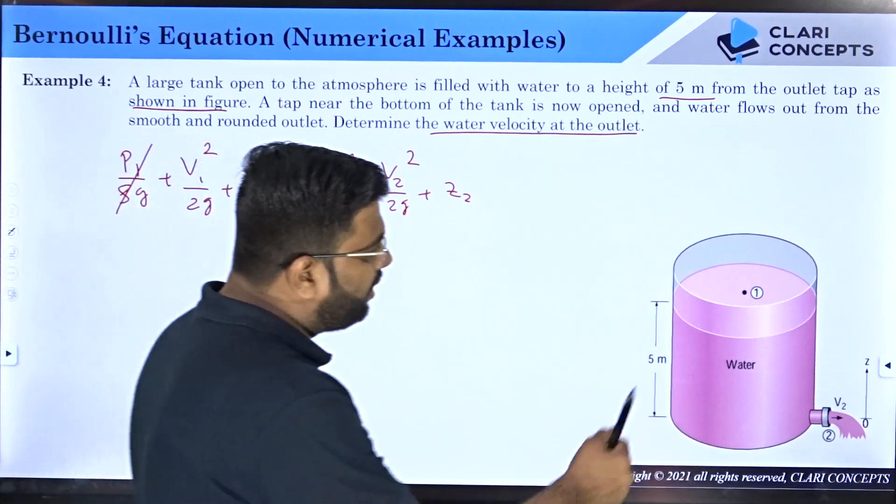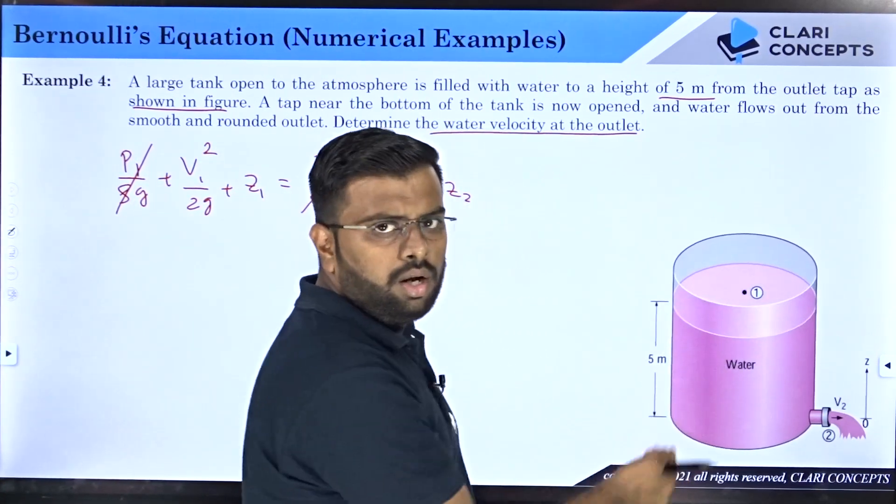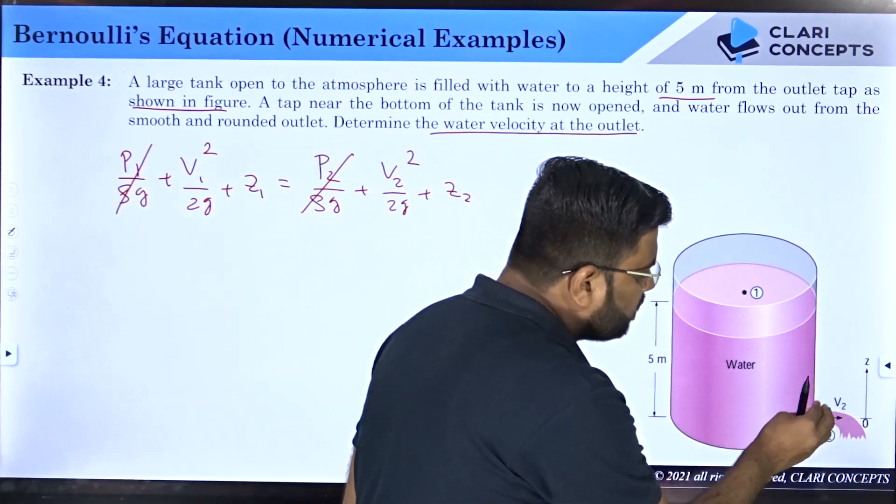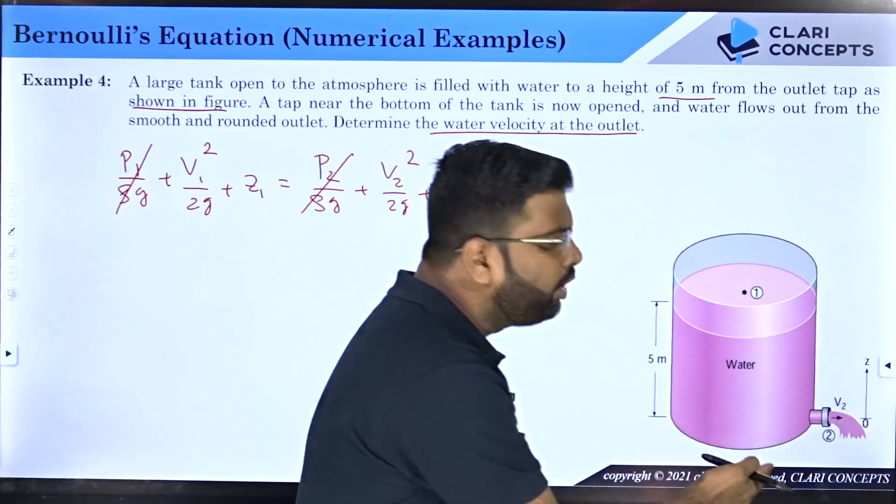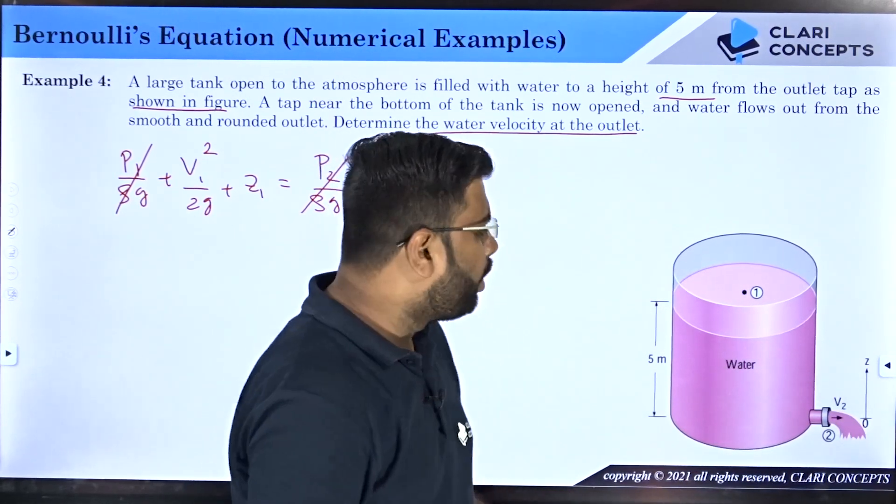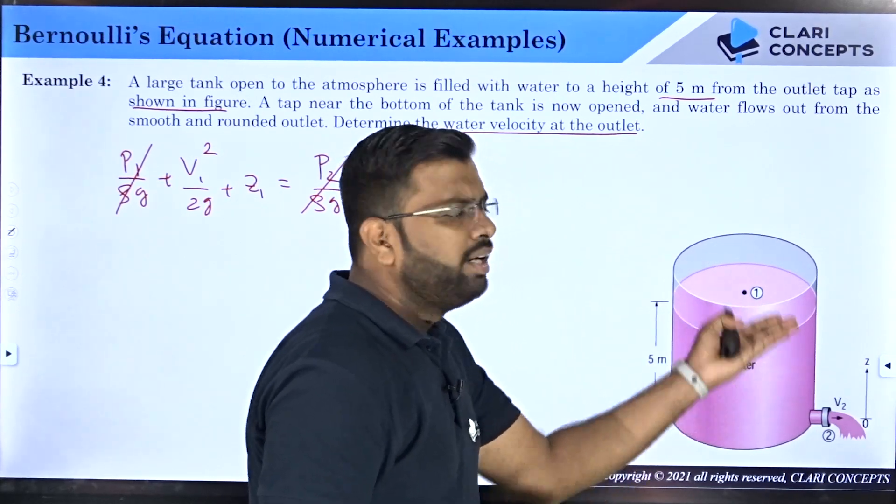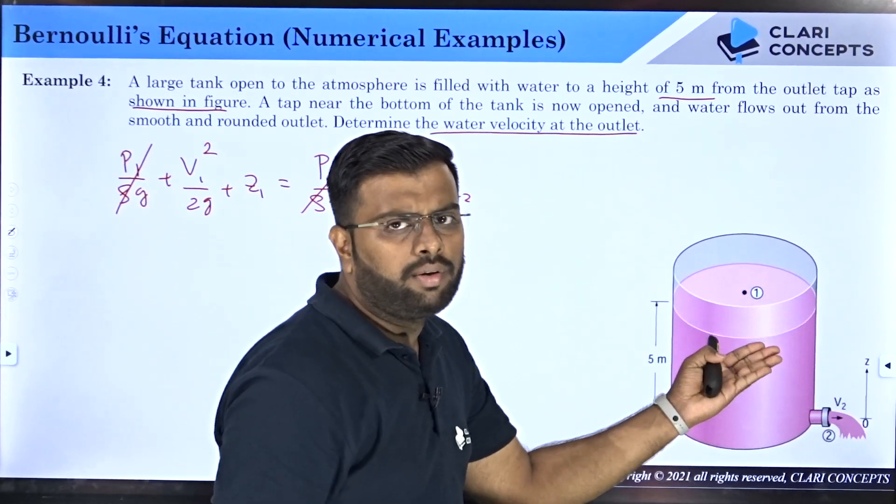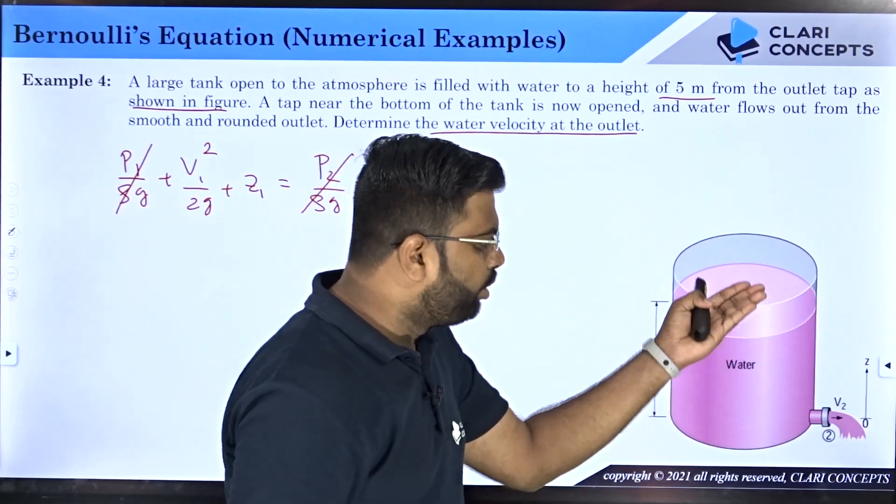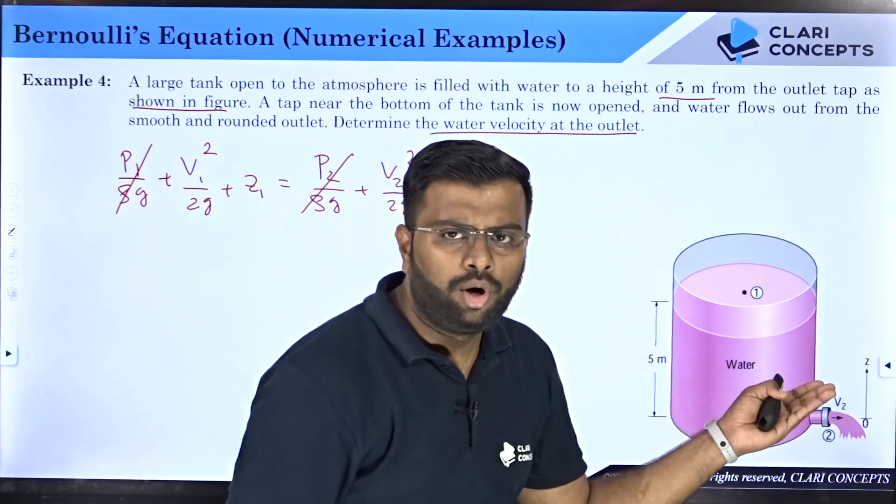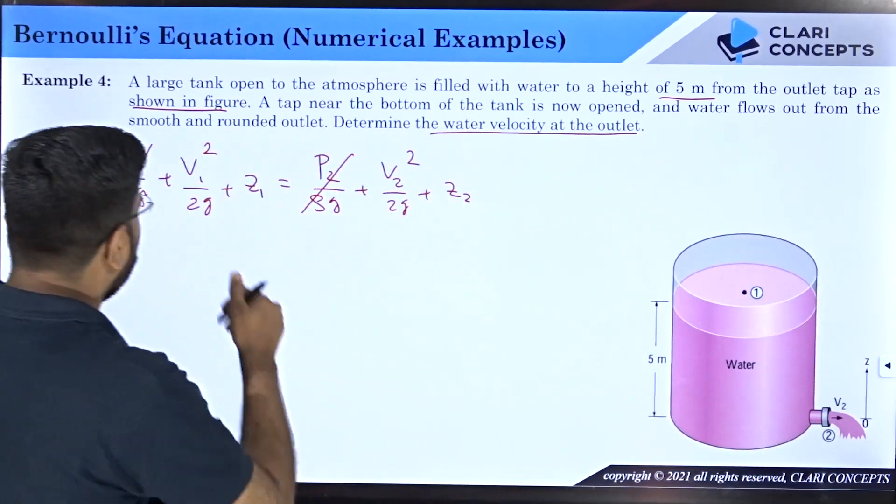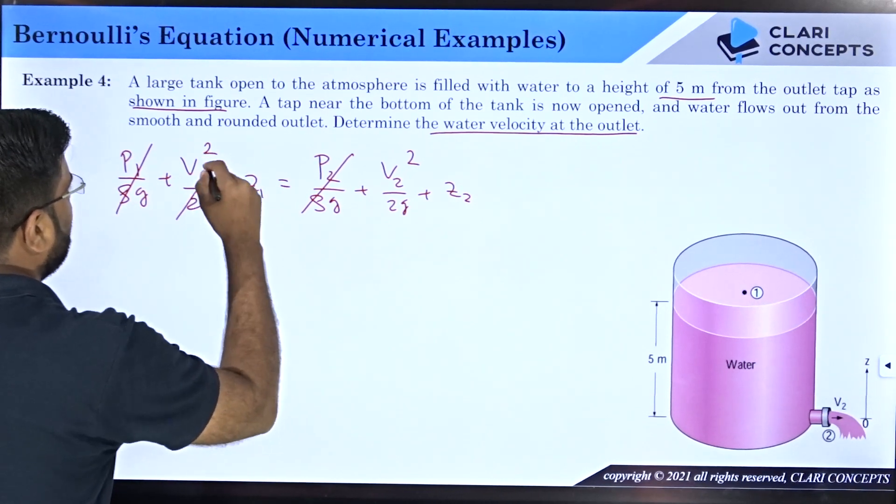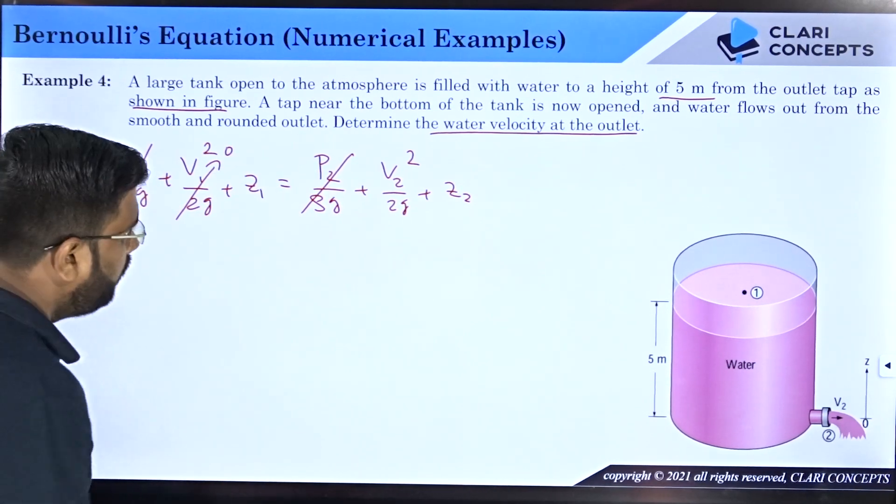Now v1²/(2g): v1 is the velocity of this water surface. No matter how much large the velocity at the outlet is, the water surface velocity is not going to increase beyond a certain limit because water will slowly reduce its height. The rate of change of height of water in the tank is not going to be abrupt, so it will be very small. And that small velocity, if you square it, will be even smaller. So you can neglect this v1² in comparison to v2.